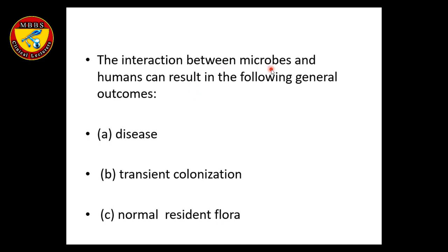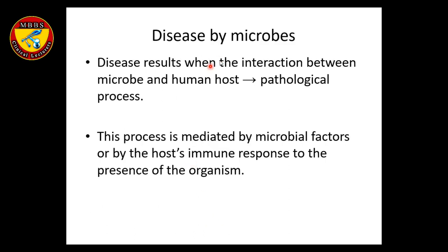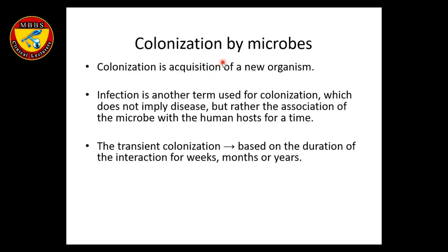When a microbe interacts with a human, it can cause disease, transient colonization — residing for a short time — or it may become a permanent resident. Disease may be due to microbial characteristics or human factors. Colonization is the acquisition of a new organism. It may not imply disease but rather the association of the microbe with the human host. A microbe may be acquired but not cause infection or disease, or it may cause infection without showing symptoms.